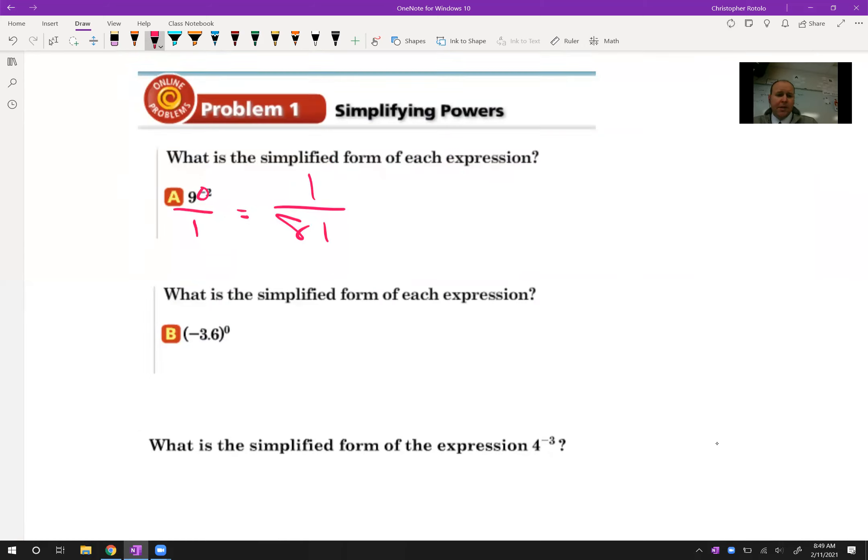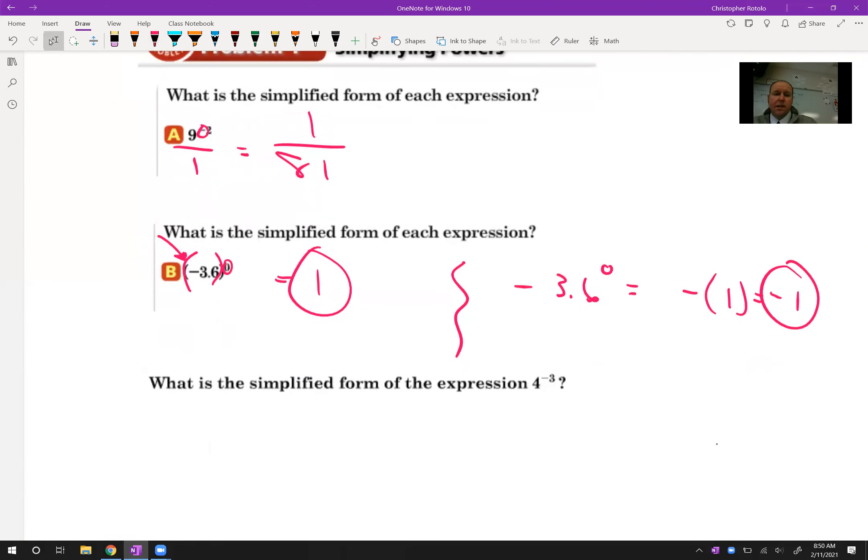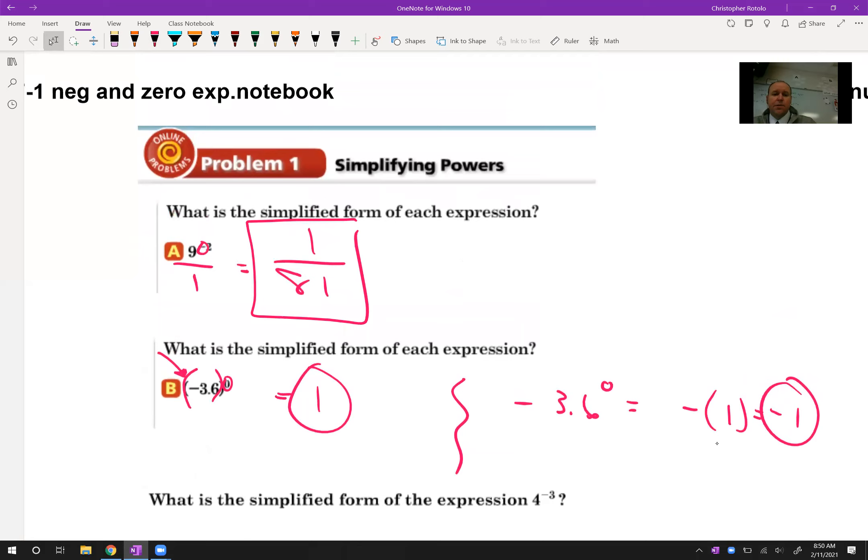Alright, so we're going to work with some parentheses here as well. Everything to the 0 power means this turns out to be 1. Now, be careful, because if I gave you negative 0.36 to the 0 power written like this, this would be negative times a 1, so it's negative 1. Okay, so if you see this and you are using your calculator, then you want to make sure that you use those parentheses on there appropriately. It's a simple idea, I hope. It's a definition. These two things are definitions.